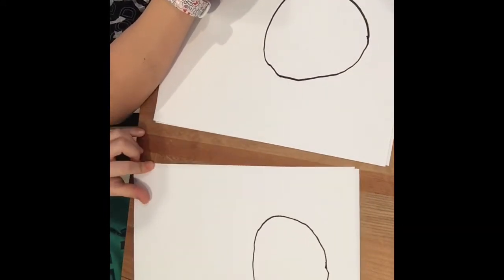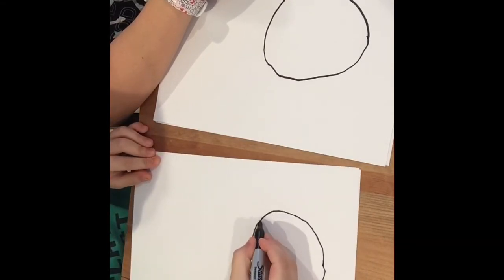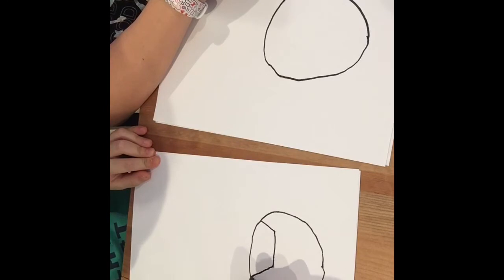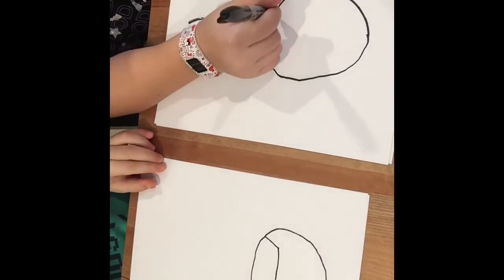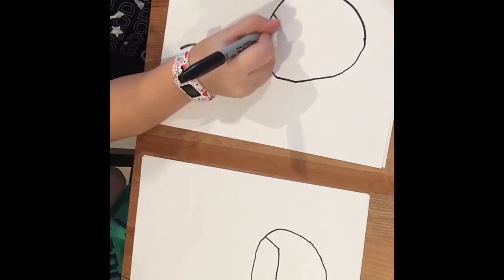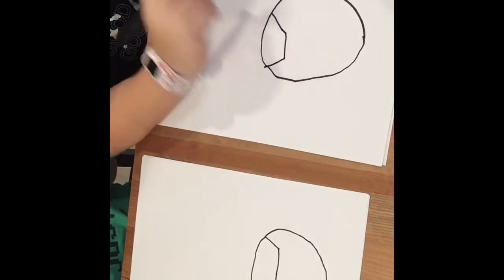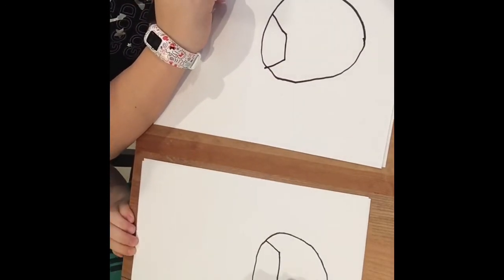And then we're going to draw the mask. So first, draw this in the shape. And then we're going to do the part where the eyes are.